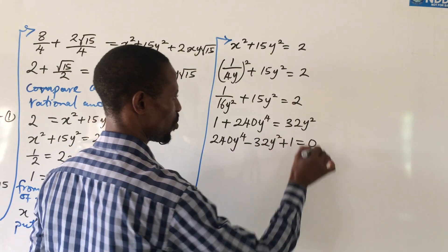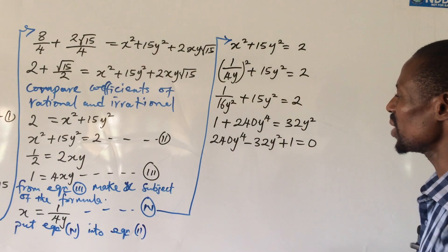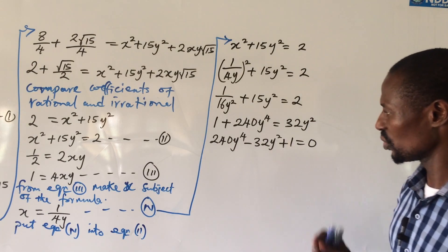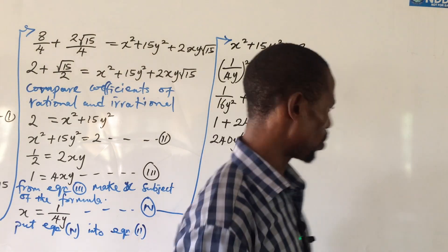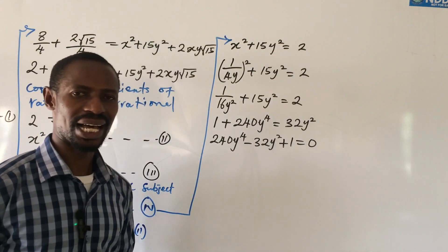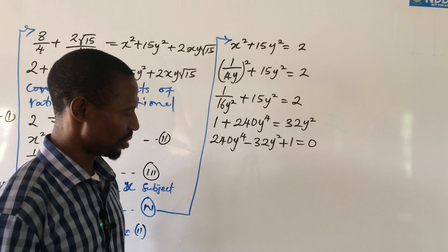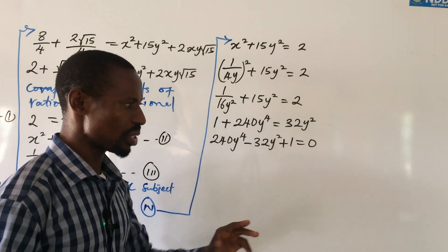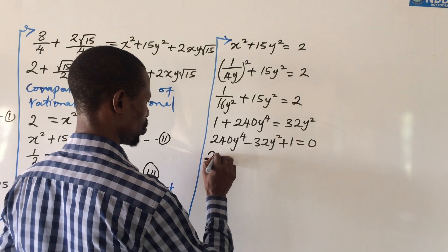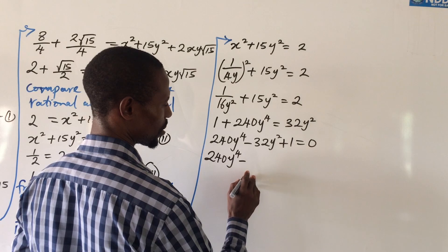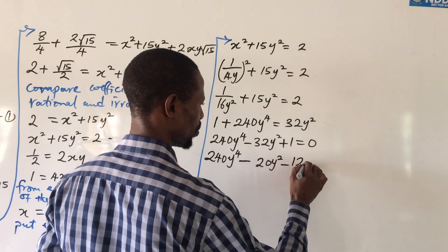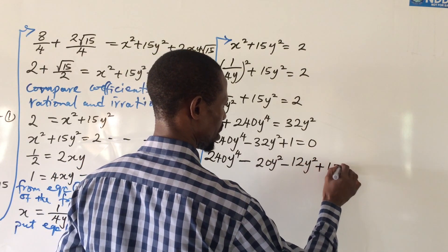We now have a quartic polynomial equation. To factor it, I'll rewrite -32y² as -20y² - 12y². So the equation becomes: 240y⁴ - 20y² - 12y² + 1 = 0.